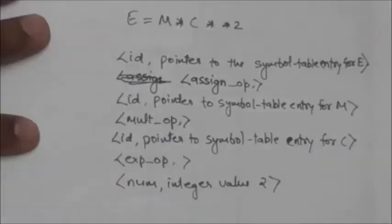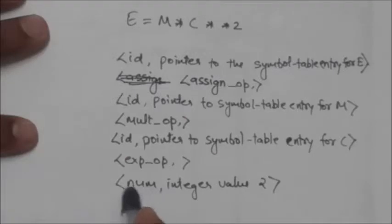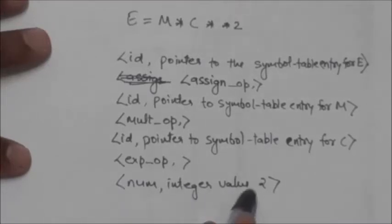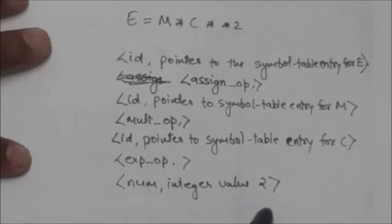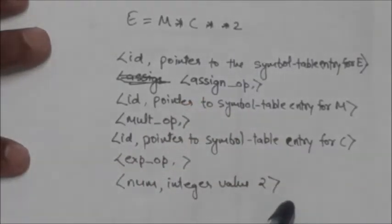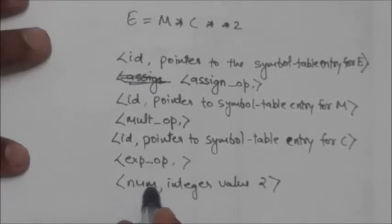For the multiplication operator, the token 'multop' is sufficient to identify the lexeme asterisk. But for the character 2, the token 'num' is generated and the attribute value associated with this token num is the integer value 2 — here it is not a pointer to a symbol table entry. However, a compiler has the option to store this character 2 in the symbol table, in which case the attribute value associated with this token num would be a pointer to the table entry.